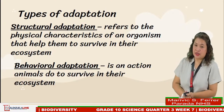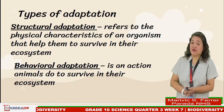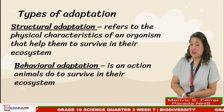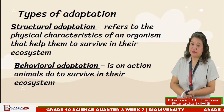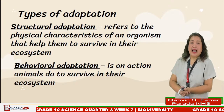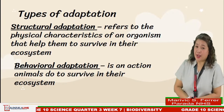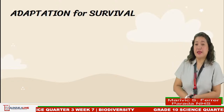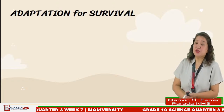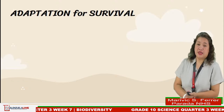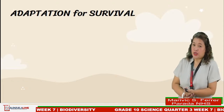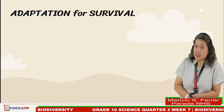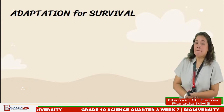Two is behavioral adaptation: an action animals do to survive in their ecosystem. For example, bird calls and migration. All organisms have their own way of adaptation that helps them survive and thrive. It is the result of evolution in which a species undergoes changes over a long period of time.